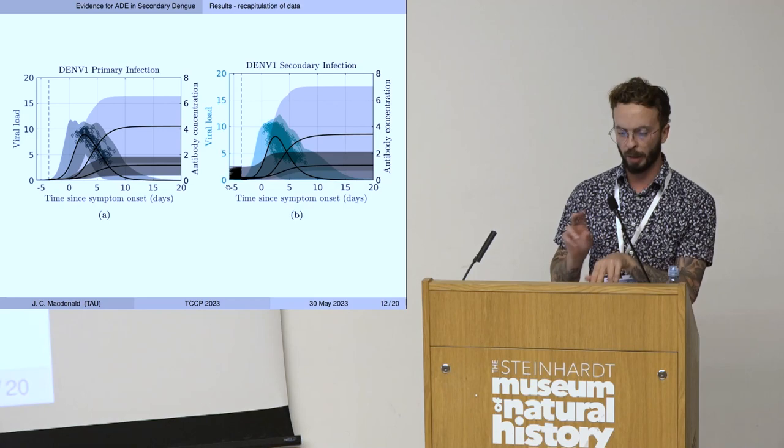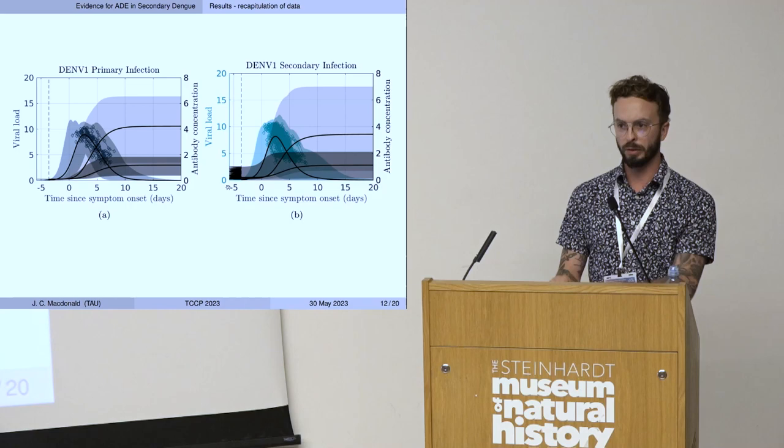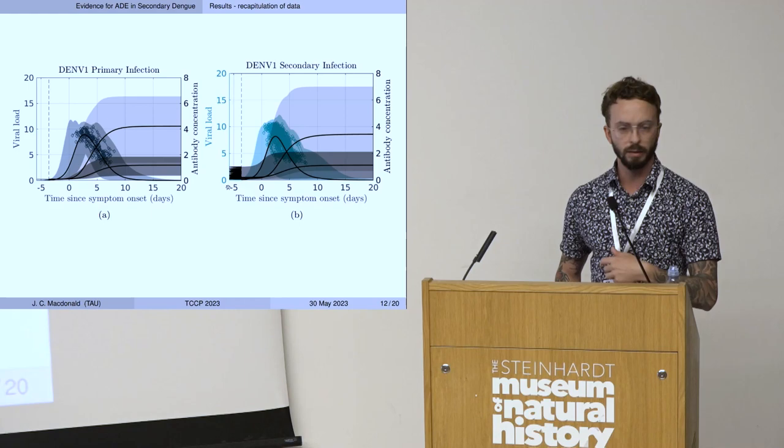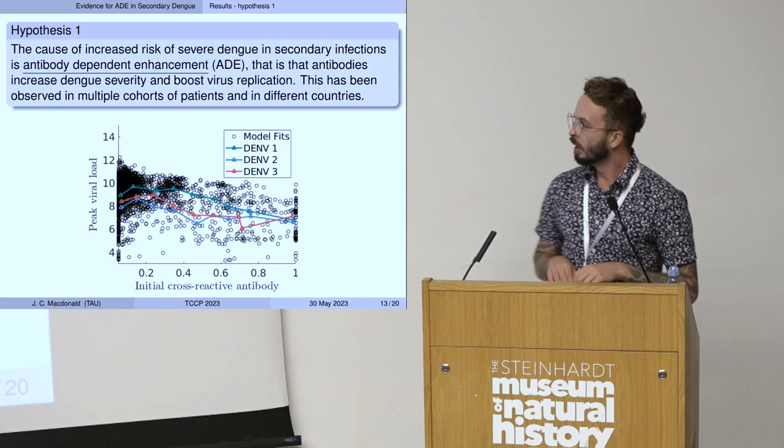For each pair of primary and secondary patients, we draw a collection of 100 infection start times for the primary and 100 for the secondary, fit the model to each of those 100 infection start times, and then take among those 100 fits for that single pairing the one with the best replication of the data, as represented by the residual of the model.